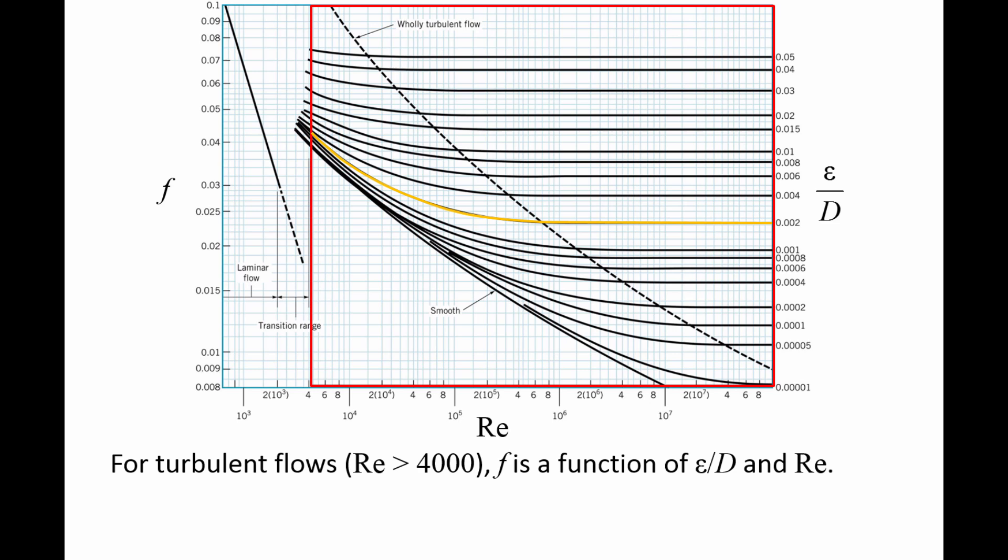Now suppose the Reynolds number of the flow is 10,000. Draw a vertical line from 10,000 on the x-axis until it reaches the orange line. Now draw a horizontal line from the intersection point to the y-axis and read the friction factor. For this example, the friction factor is approximately 0.032.